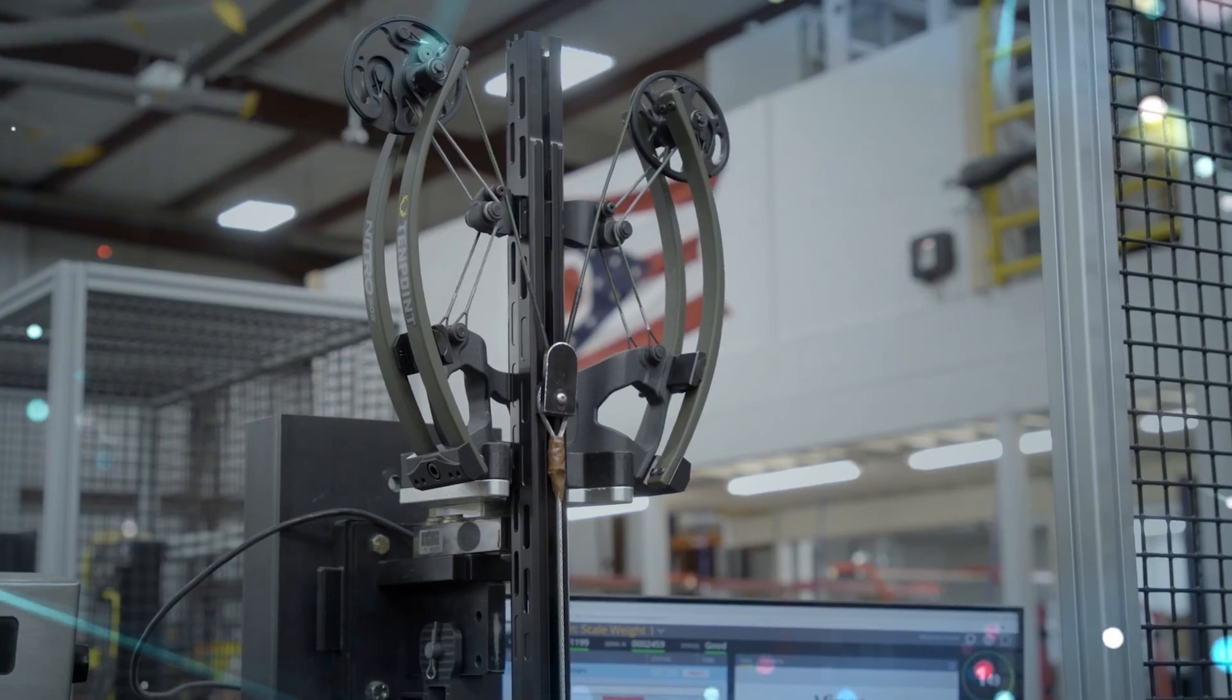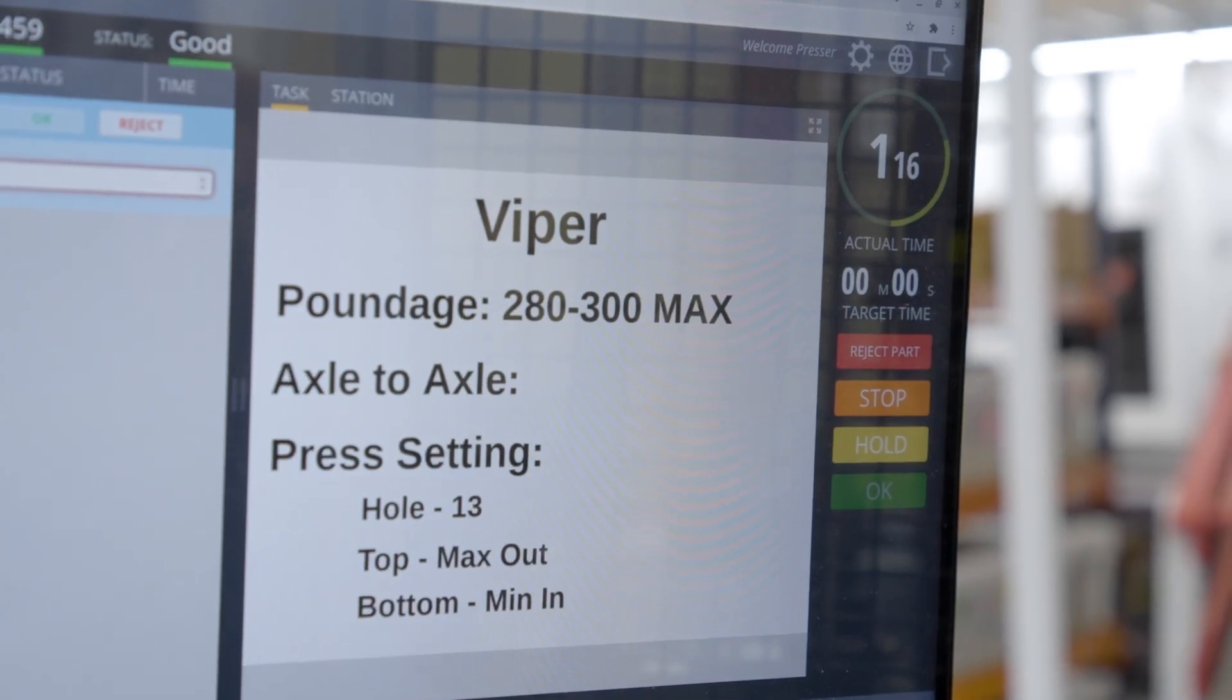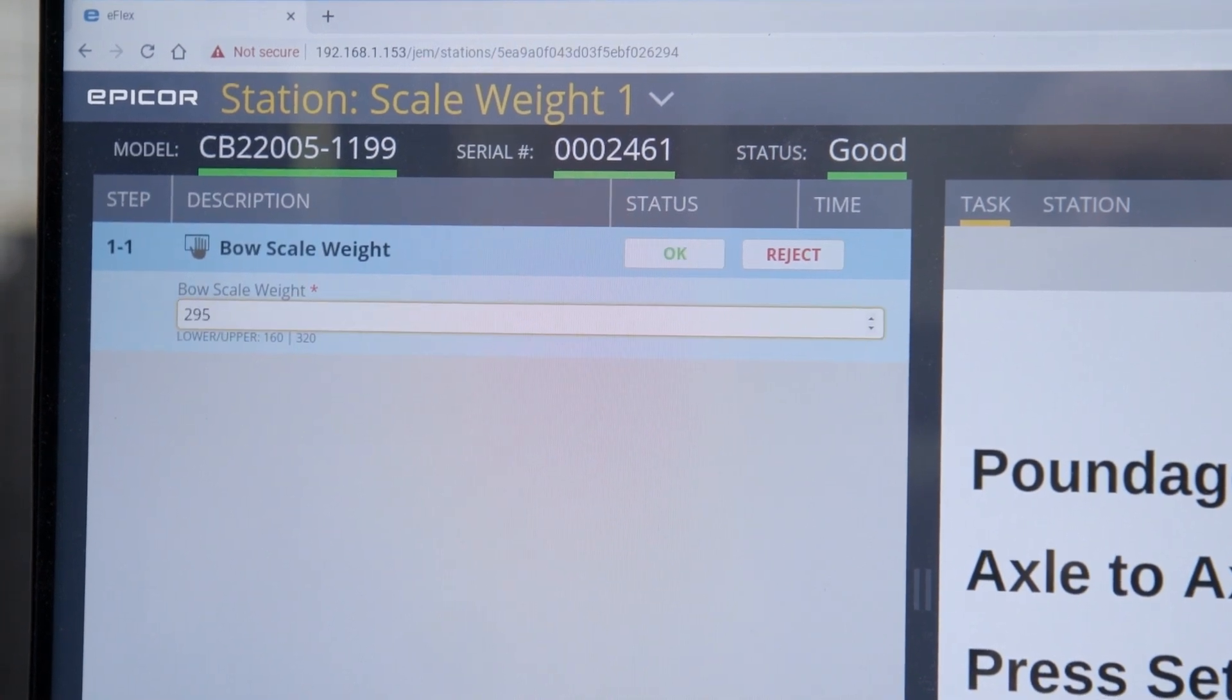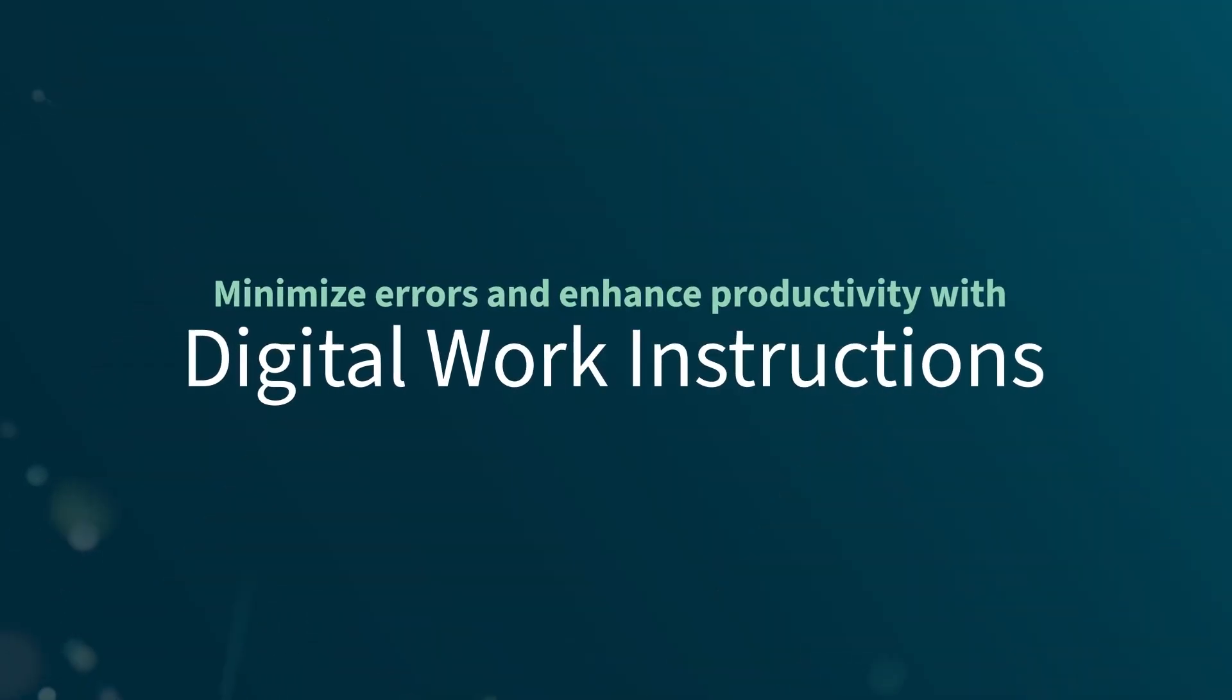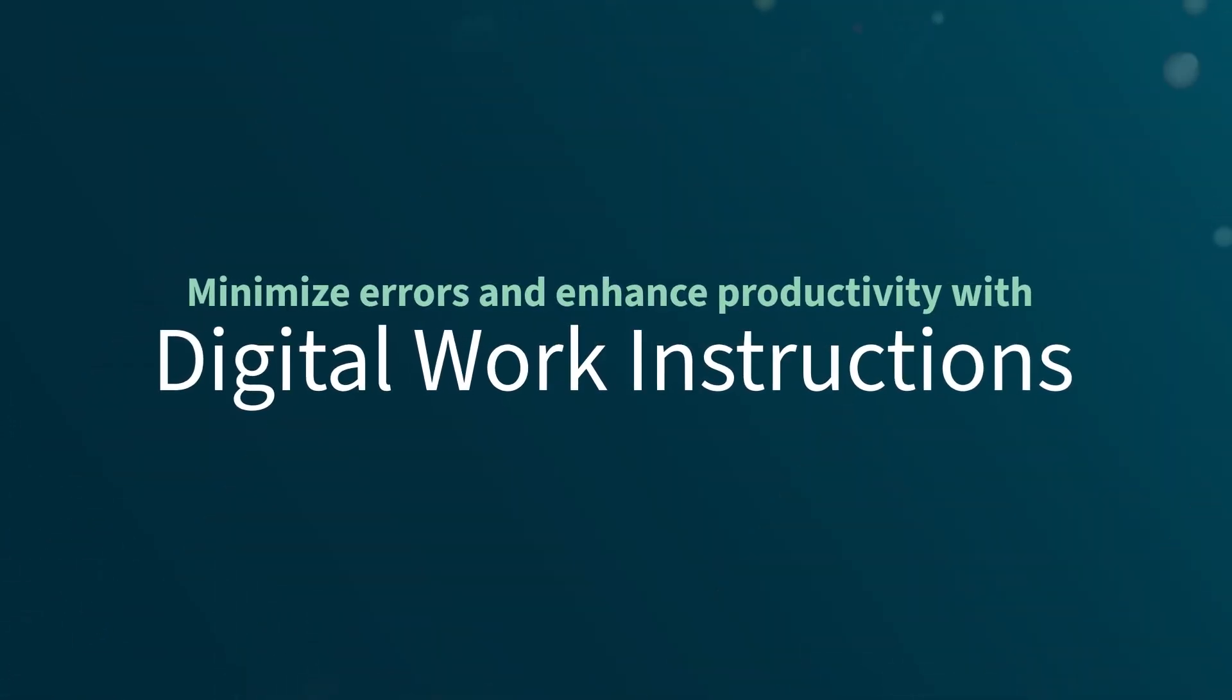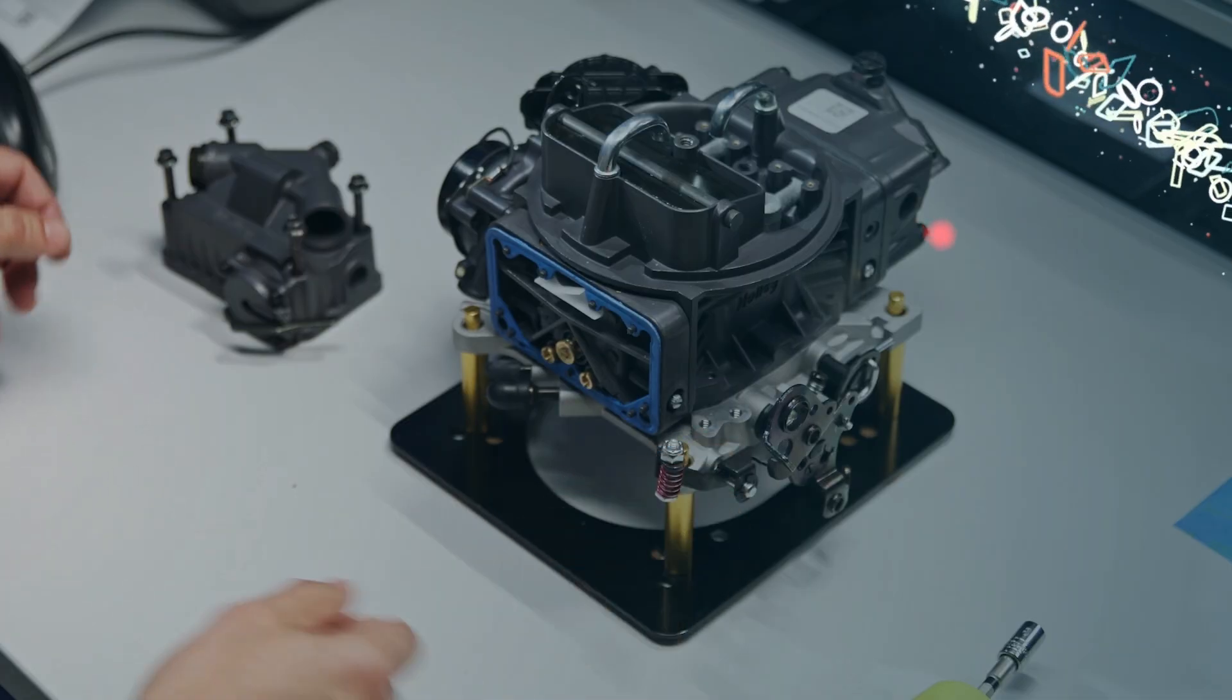Connected Process Control adapts to your unique environment with on-premise or cloud-based systems. Minimize errors and enhance productivity with digital work instructions that provide clear, step-by-step directions.